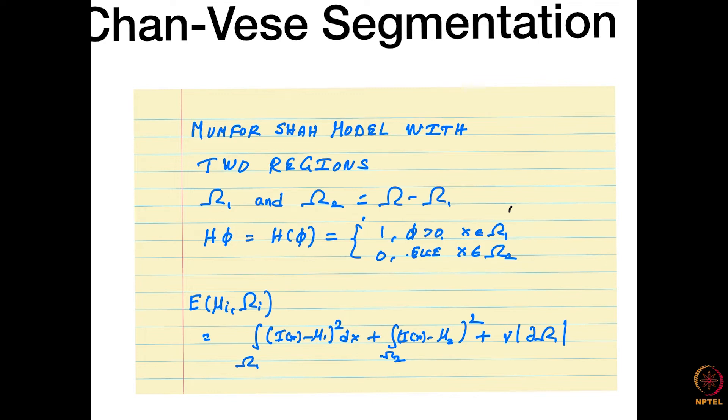Then you have this energy term which you can write in this form. Why am I writing this with mu_i? Because you remember we had f minus u squared. Now, instead of that, we have these two terms: f minus mu_1 squared here and f minus mu_2 squared in these domains. This is called a piecewise constant approximation, where you are assuming that the foreground has constant value mu_1, background has constant value mu_2. And of course, we are also looking at the length of the curve here, delta omega.